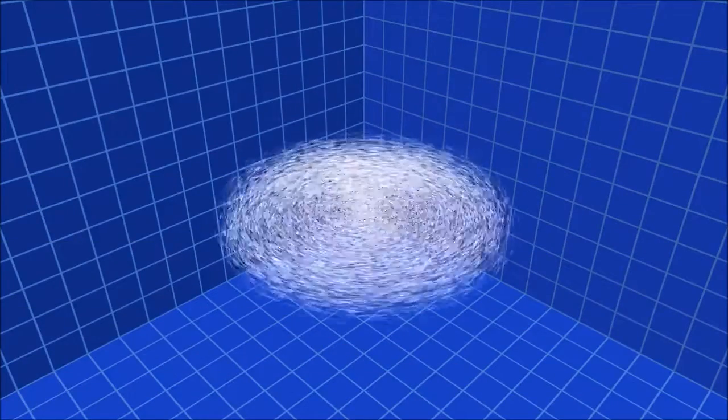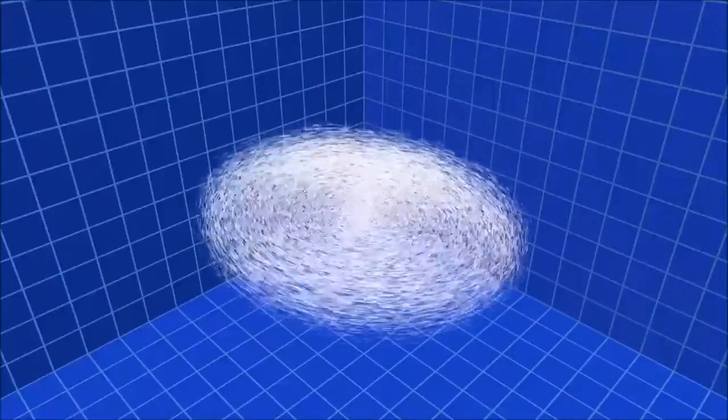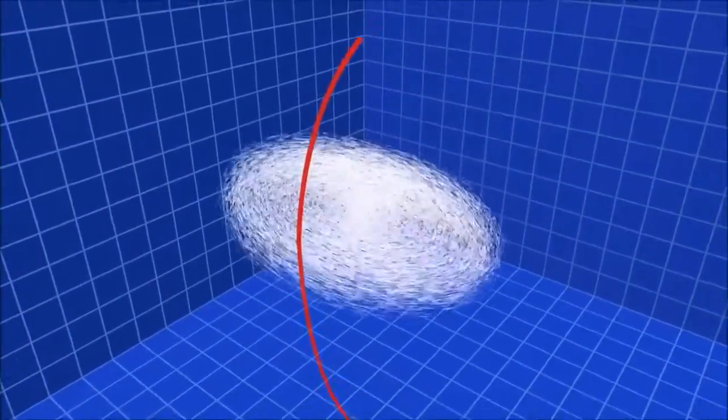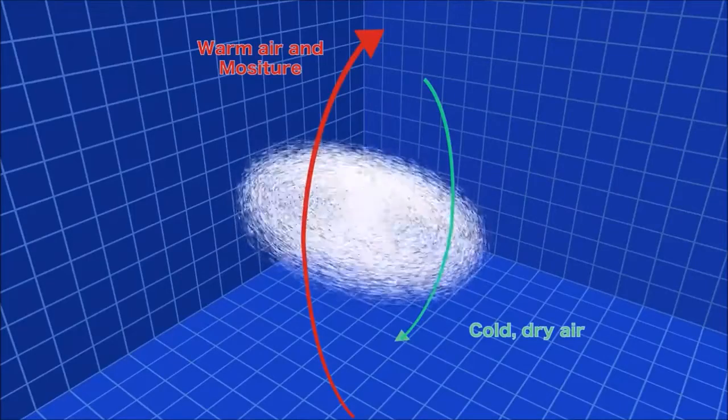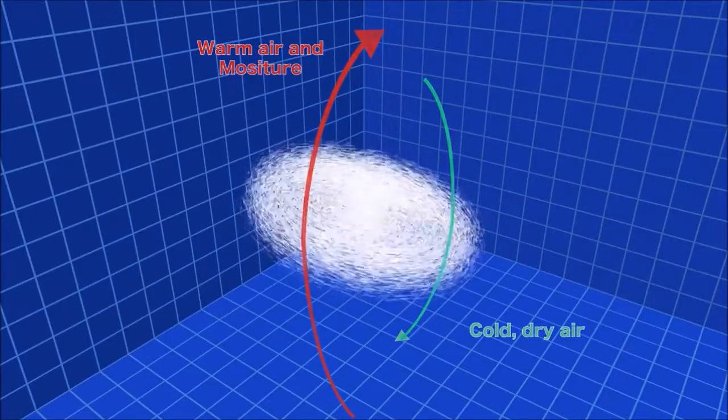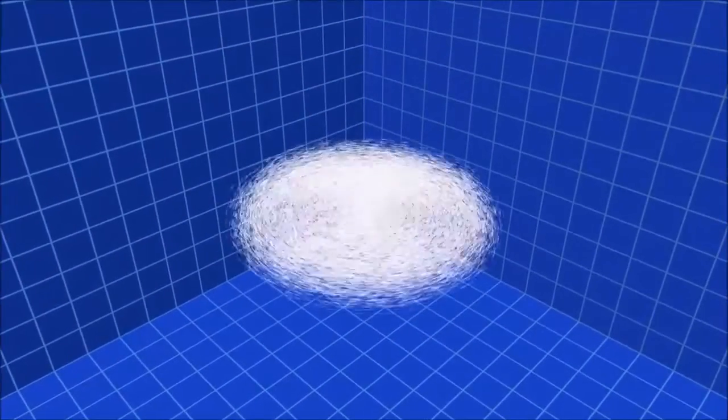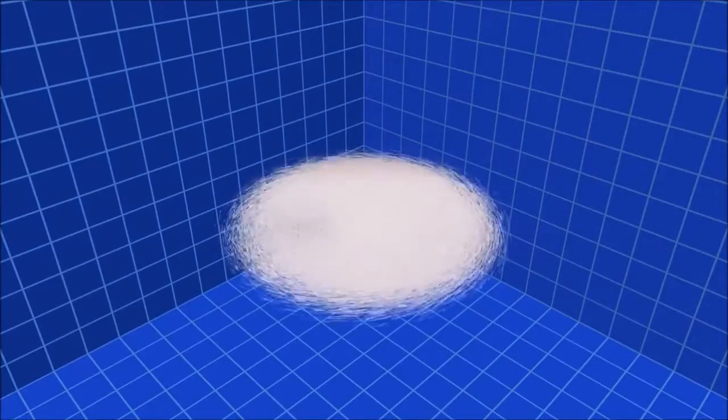As a supercell grows in size, the vortex in the middle will begin to tilt, pulling warm air and moisture upward and pushing cold, dry air down toward the ground. The updraft of warm air causes the vortex to swell with water vapor, creating a spiraling funnel cloud.